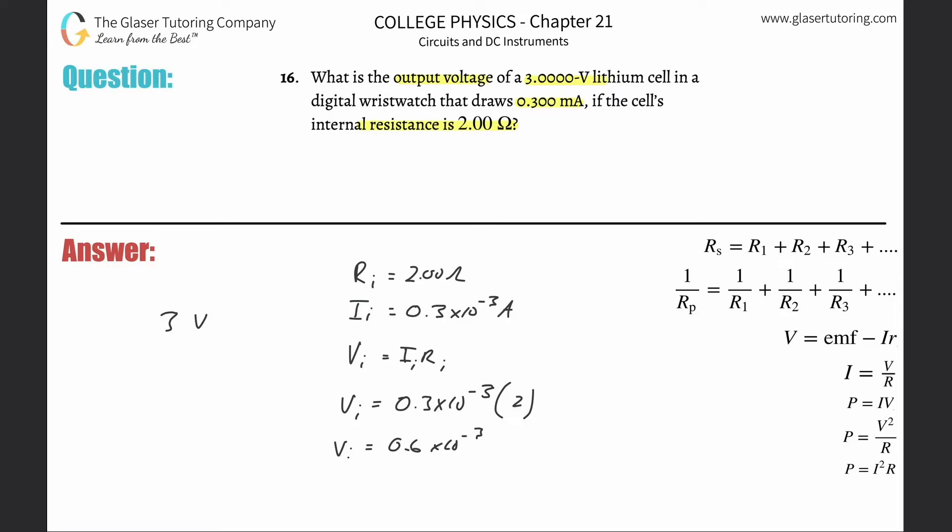If you wanted to reorganize that a little bit, that would be 6 times 10 to the minus 4th volts. This is the amount that is lost inside the battery. The battery theoretically produces 3 volts, but some of it is being lost. So 6 times 10 to the minus 4th volts is being lost. The actual output voltage is going to be 3 minus that particular value.